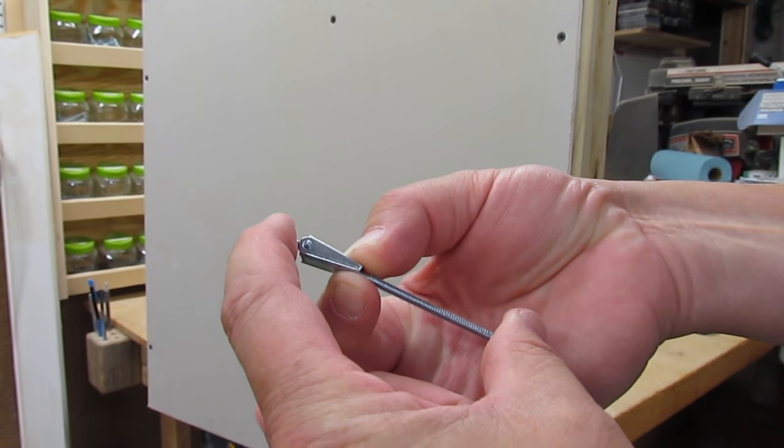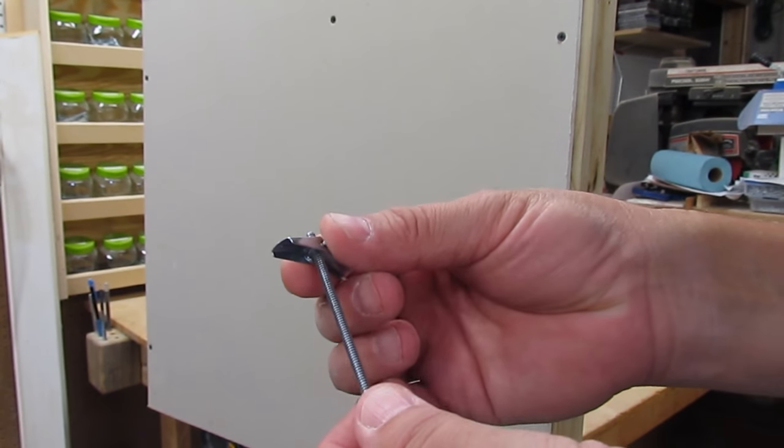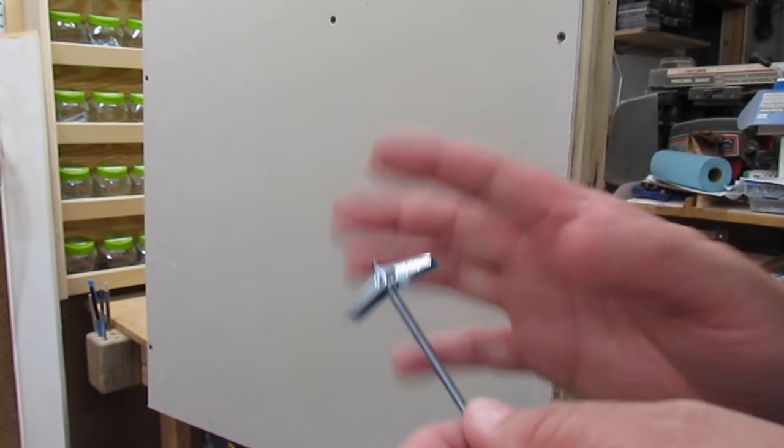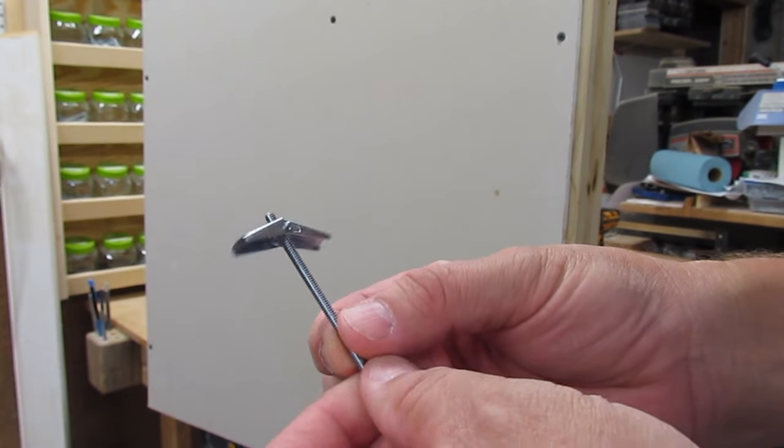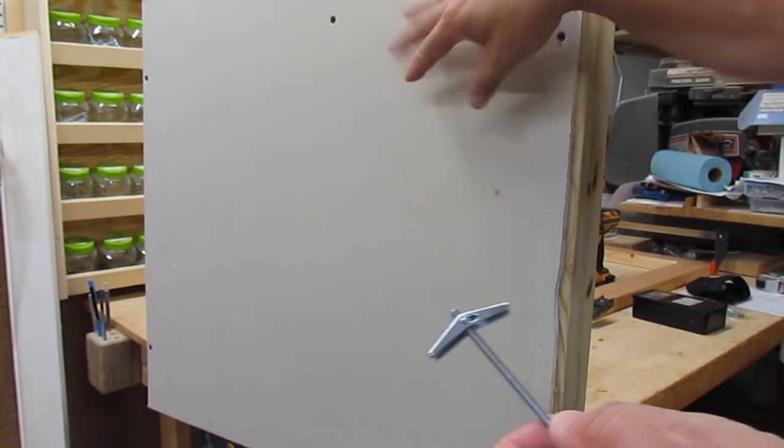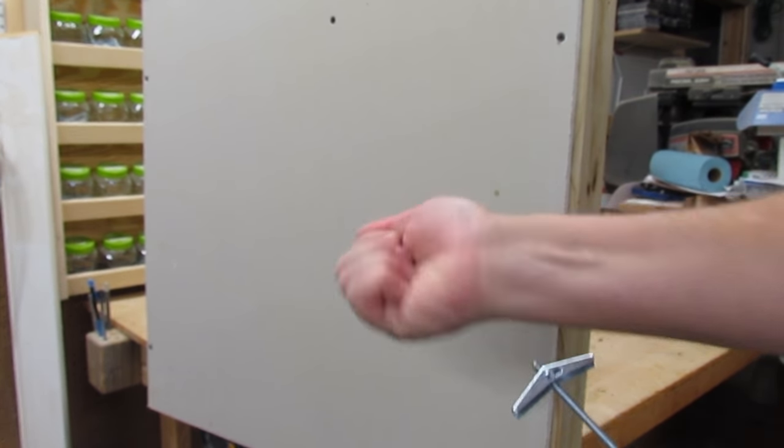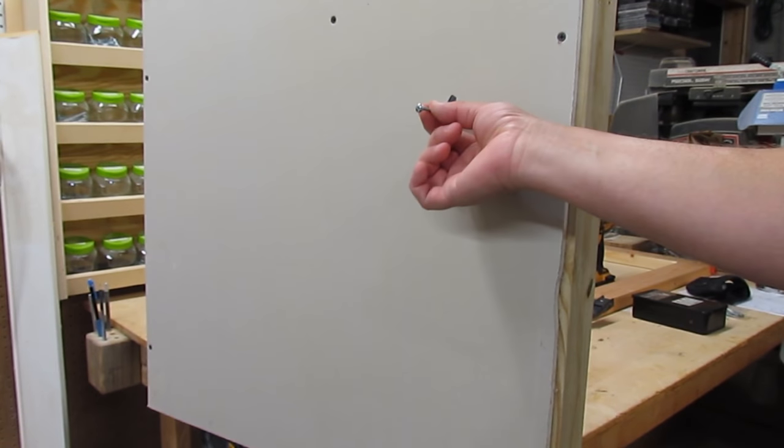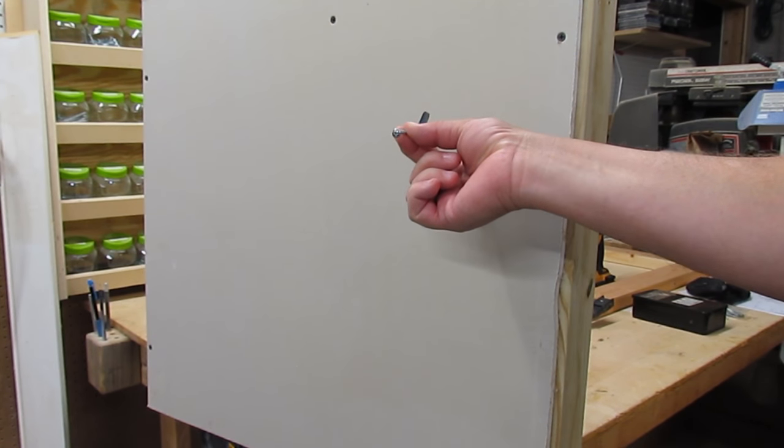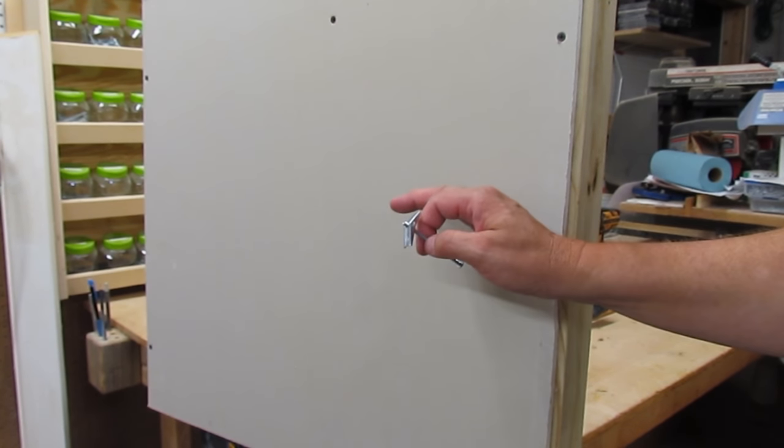The size of the toggle determines how much weight it can carry. Basically, an 1/8 inch toggle can handle about 200 pounds in tension and a little more than that in shear. Shear is like directly down the wall or up the wall, and tension is pulling away from the wall. So an 1/8 inch toggle can handle about 200 pounds of tension, a 3/16 can do about 250 pounds, and a 1/4 inch toggle can do about 300 pounds.